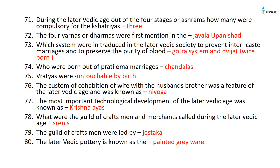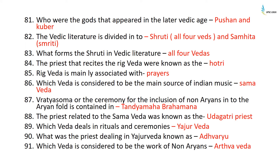The most important technical development of the later Vedic age was iron, known as Krishnayas. The guild of craftsmen and merchants during the later Vedic age were called Shrenis, led by the Jyeshtha. The later Vedic pottery is known as the Painted Grey Ware. The gods that appeared in the later Vedic age were Pushan and Kubera.